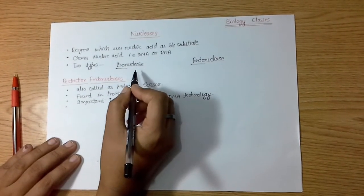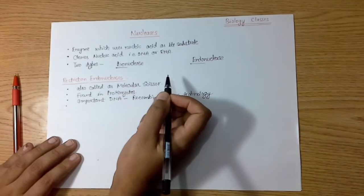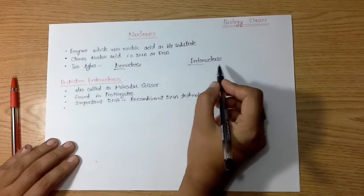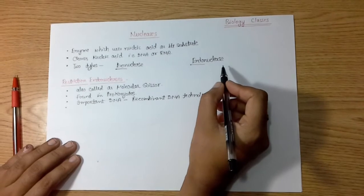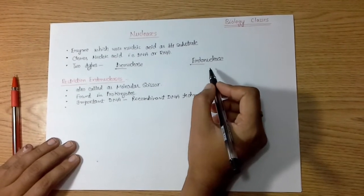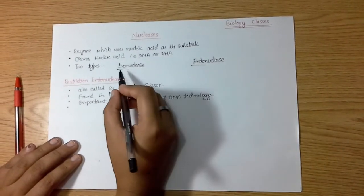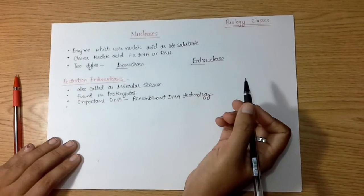Exonucleases cleave either the 5' or the 3' terminal ends, while endonucleases are nucleases which cleave within the DNA or RNA. The terminology is very easy: exo means outside and endo means inside or within.